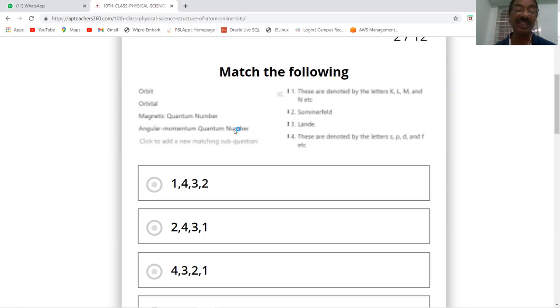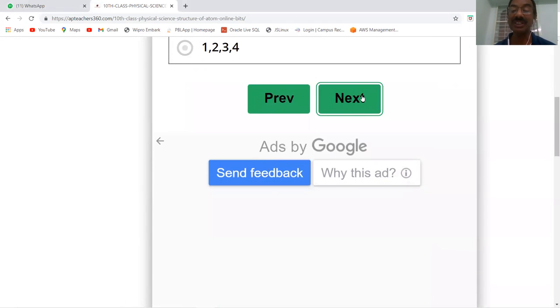Now, the orbital angular momentum quantum number was proposed by Sommerfeld. This is the next question on the screen.